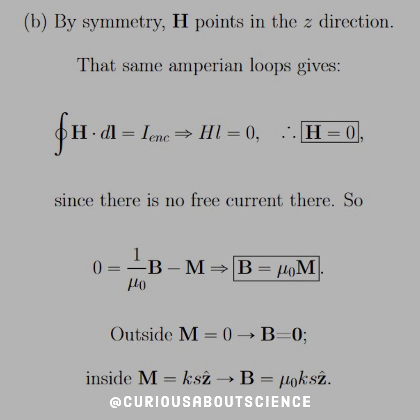Since there's no free current there, and using the relationship of the auxiliary field, we get 0 equals 1 over mu knot B minus M. And if we solve for B, we get B equals mu knot M.